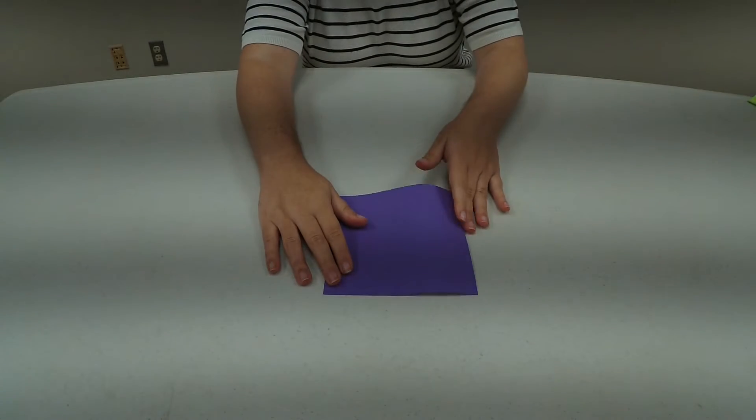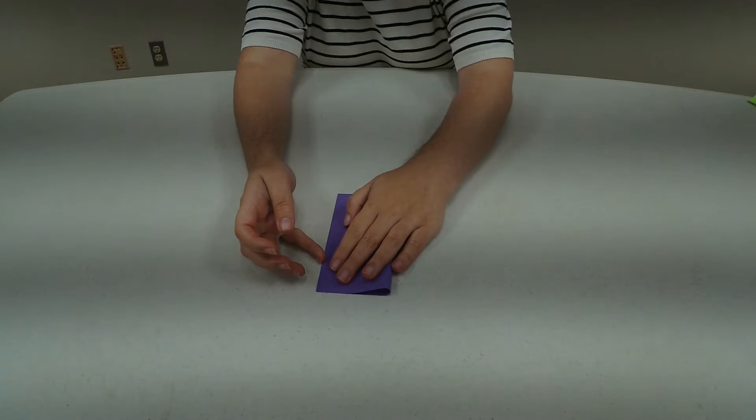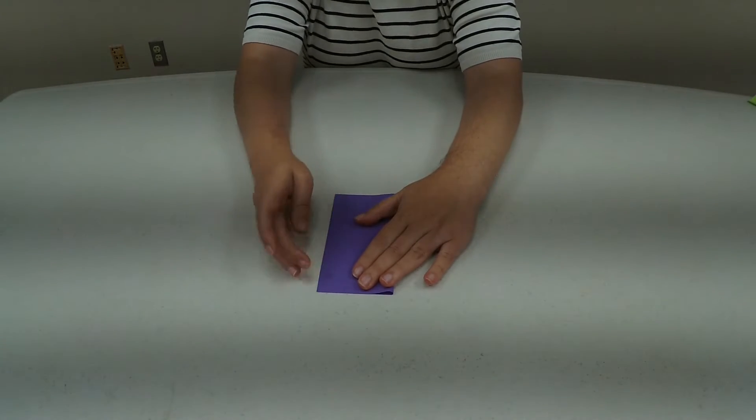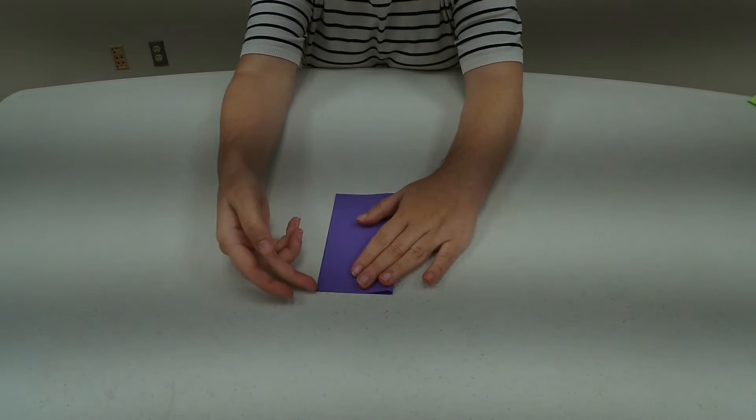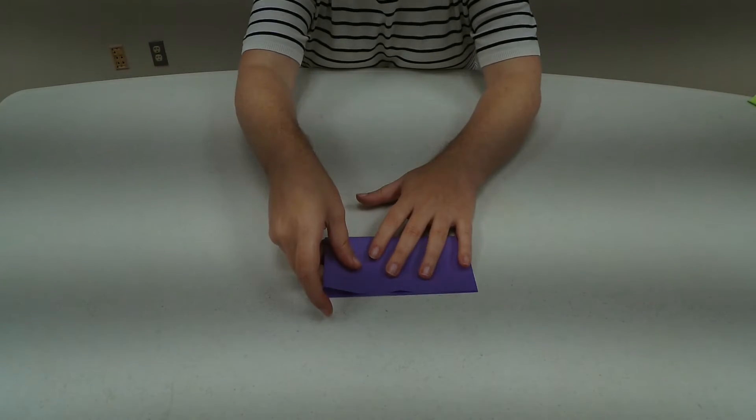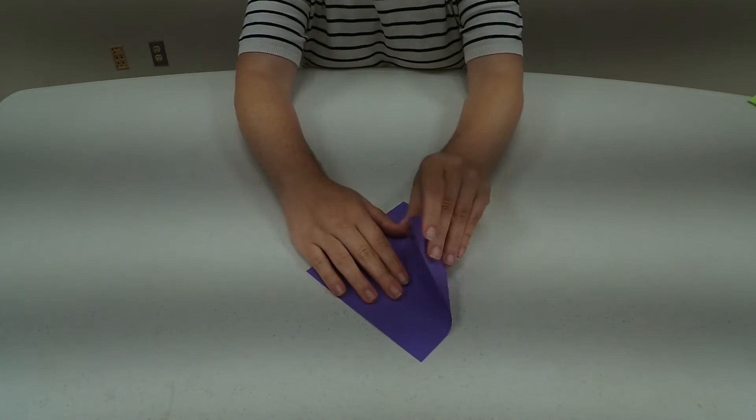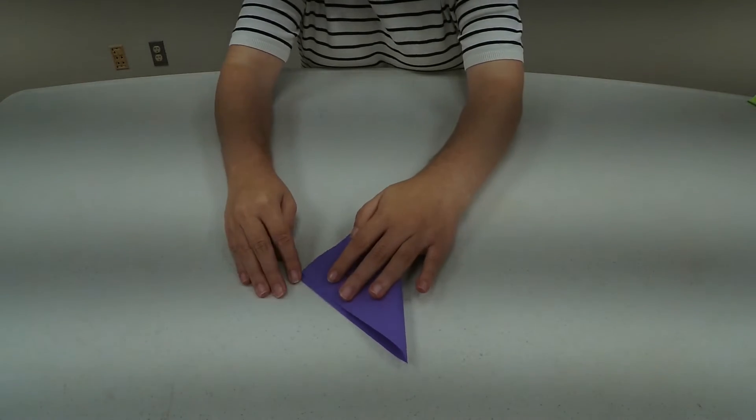You're going to start by folding your origami paper in half both ways, and then you'll do it again this way as well.